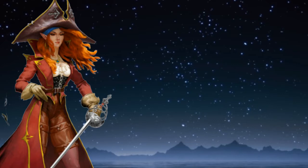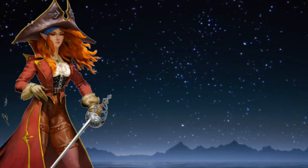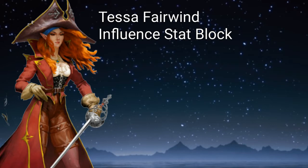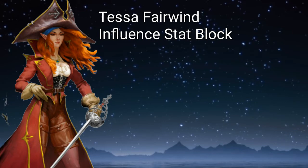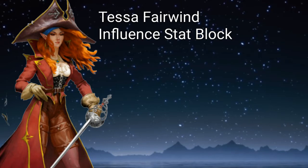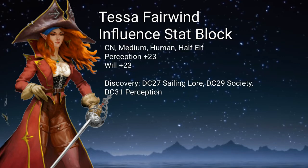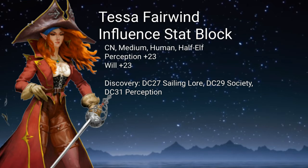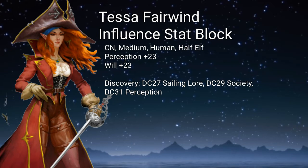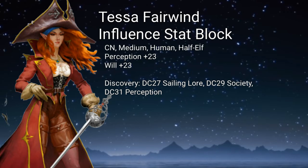The PCs will have five rounds to convince her to aid them. There is no influence stat block that exists for Tessa Fairwind, so we will have to create one. In Pathfinder First Edition, Tessa Fairwind was a level 13 Bard, and we can use level 13 as a baseline. We know that Tessa Fairwind is a Chaotic Neutral Half-Elf. We will give her a Perception of +23 and a Will save of +23. We will use Sailing Lore, Society, and Perception as possible skills that a PC can use for discovery.